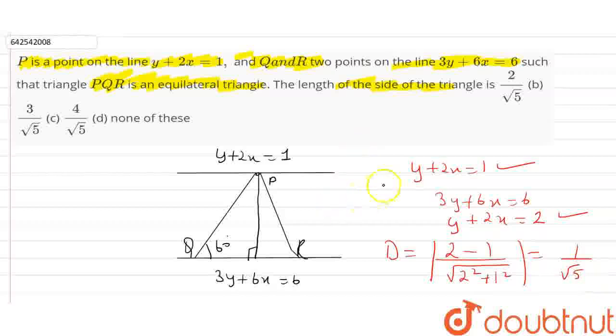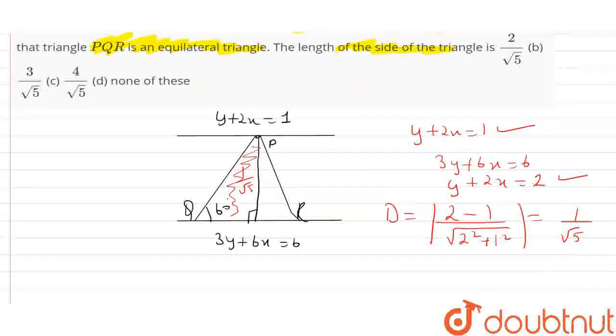Now this distance is 1 upon under root 5. And we know that if we consider this triangle, in triangle PQR, sin 60 will be perpendicular. Let us name it as O.